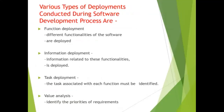The various types of deployments conducted during the software development process are: function deployment, where different functionalities of the software are deployed; information deployment, where information related to these functionalities is deployed; task deployment, where tasks associated with each function must be identified; and value analysis, where the priorities of requirements are identified.